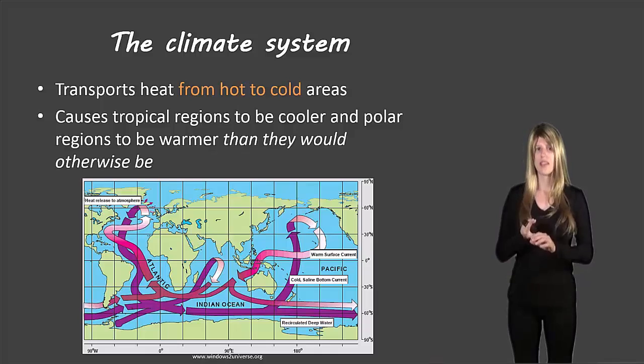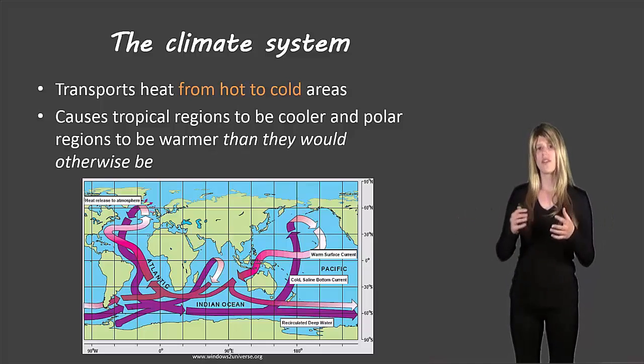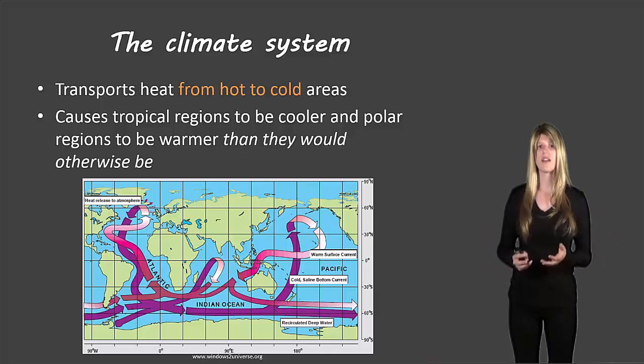And then with our conduction, this one's a little bit different but it has to do with different substances on earth and how well they absorb and how well they can conduct heat throughout themselves. So all three of these processes are happening on earth and they affect the climate on earth.